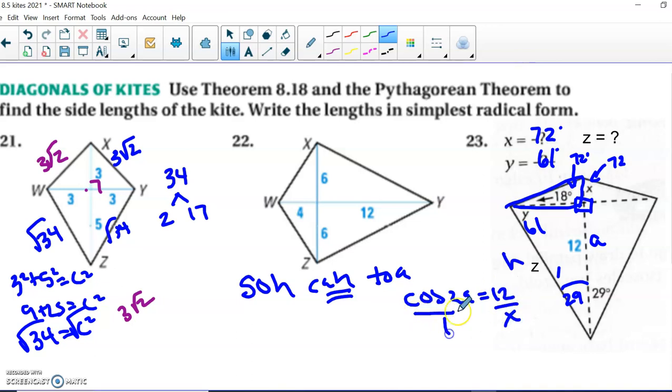I'm going to cross-multiply, divide each side by cosine of 29, and we get x equals 12 divided by cosine of 29, and it looks like it's going to be about 13.7.